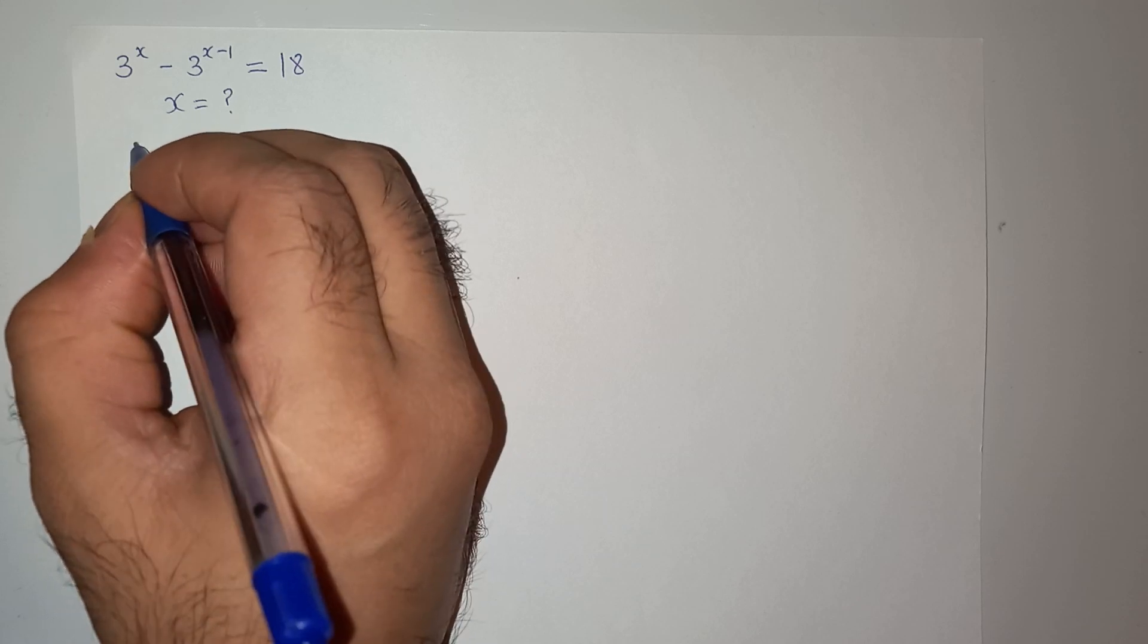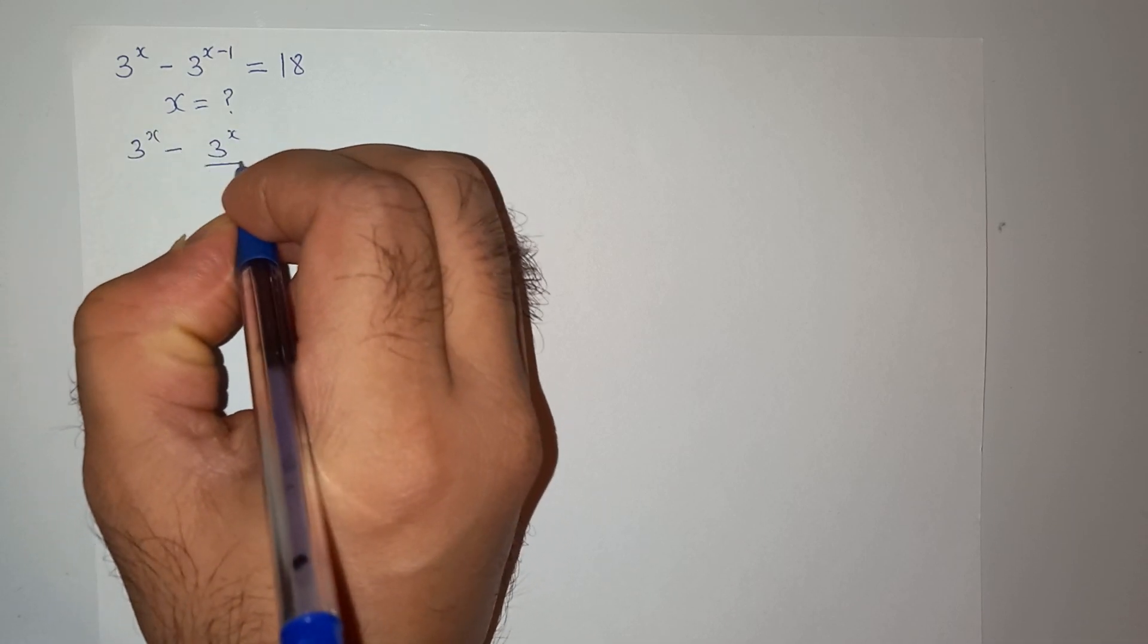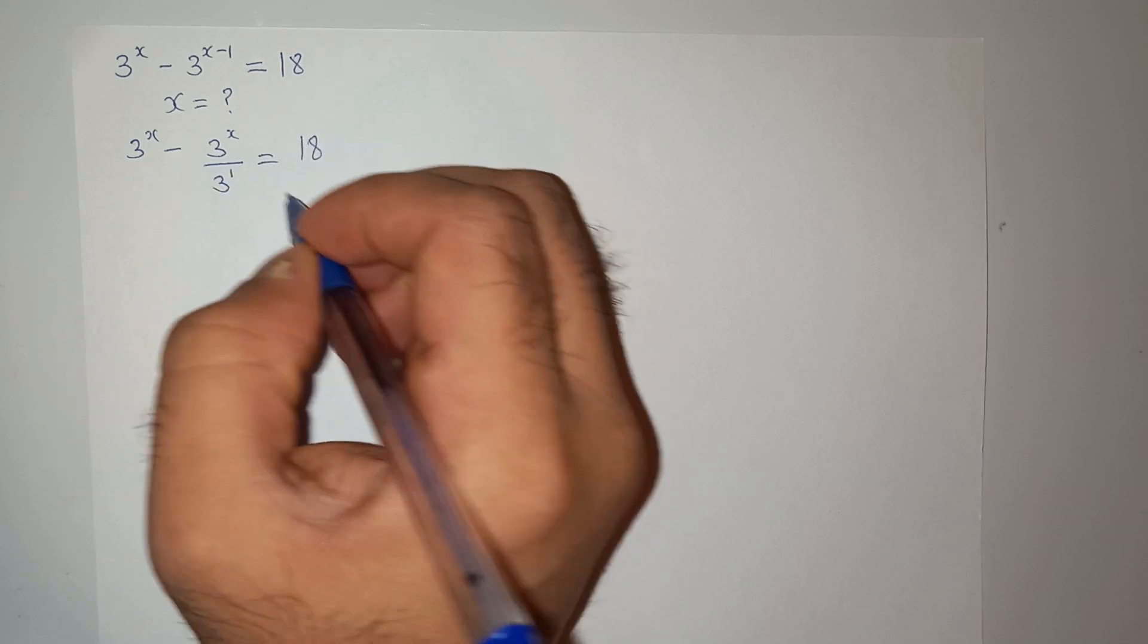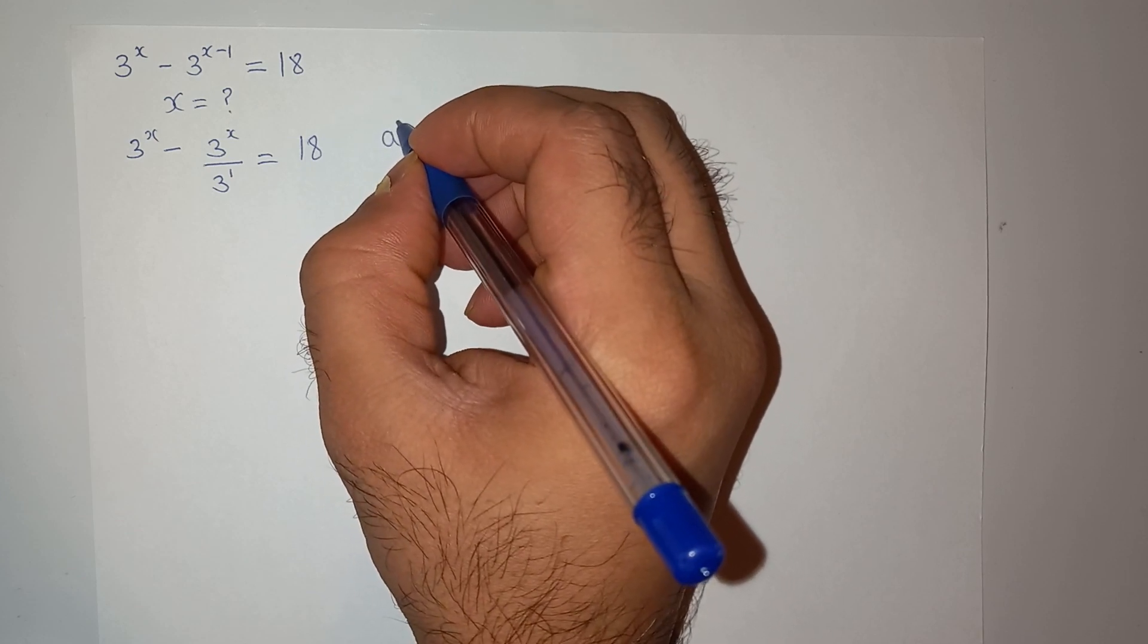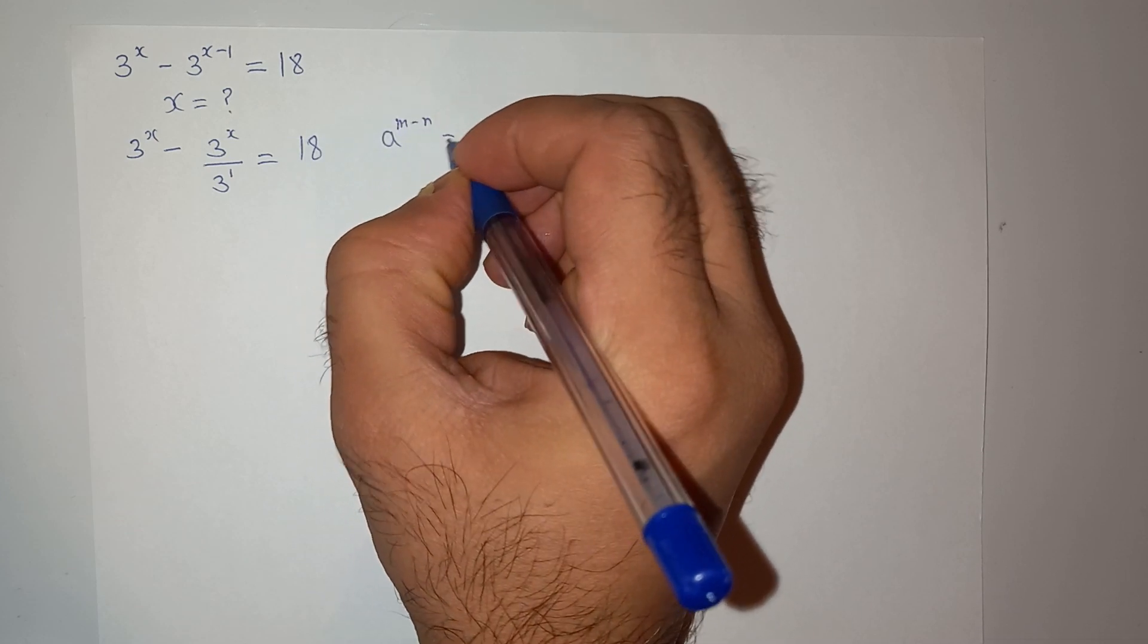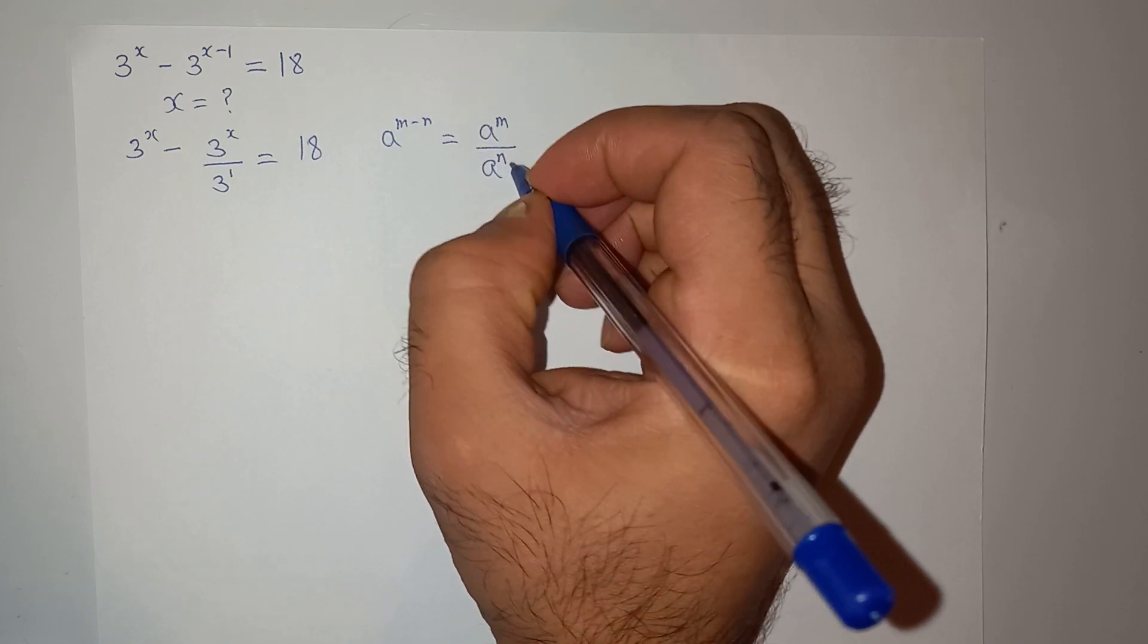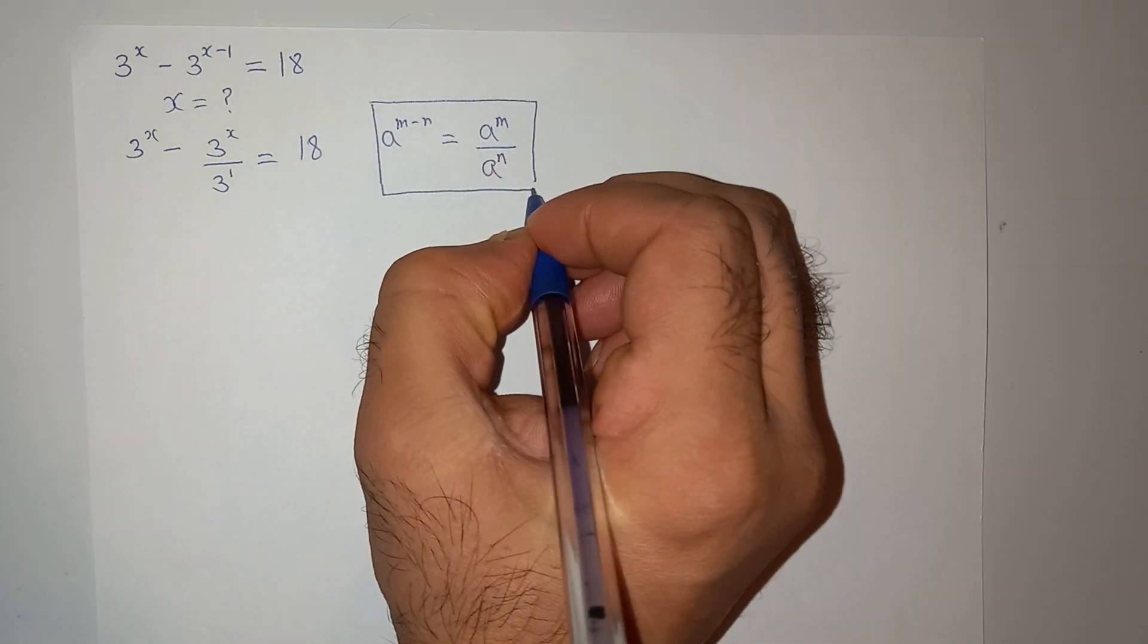We can write this as 3 power x minus 3 power x divided by 3 power 1 equals to 18. So basically I have applied this exponential rule which is a power m minus n equals to a power m divided by a power n. This is clear.